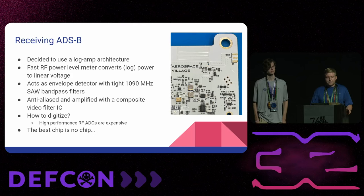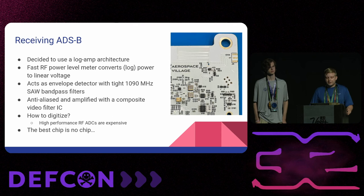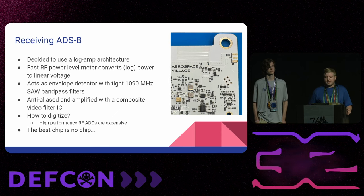The third major way of receiving ADSB is the log amp architecture. This uses a very fast RF power level meter which converts the logarithmic received RF power into a linear output voltage. In this mode it can act as an envelope detector when filtered with very tight 1090 MHz SAW filters.